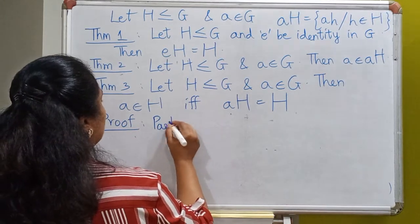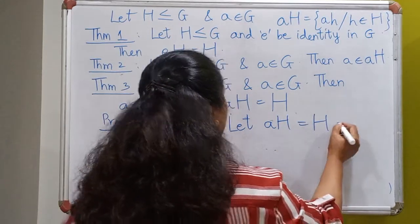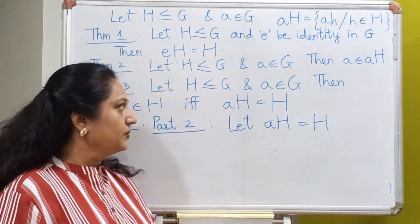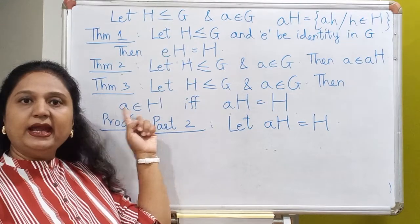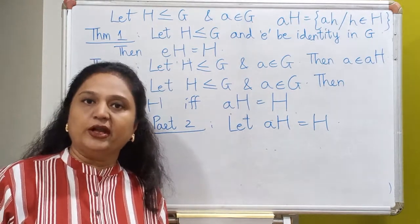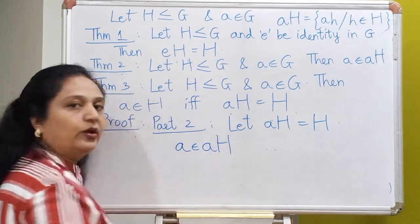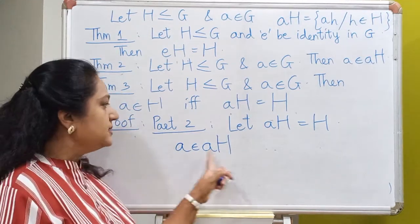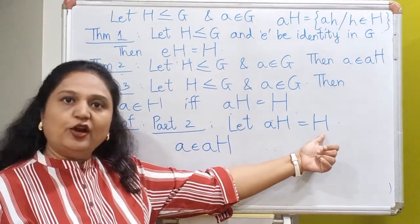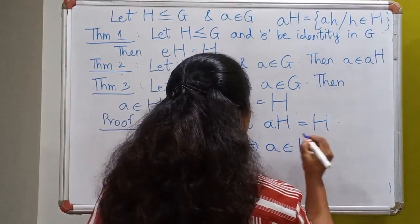For Part 2, let AH be the same as H. We want to prove that A lies inside H. By Theorem 2, which we have already proved, the element A always belongs to its own left coset AH. And since this coset AH is the same as H, when A belongs to AH it automatically belongs to H. So A belongs to H, completing the proof.